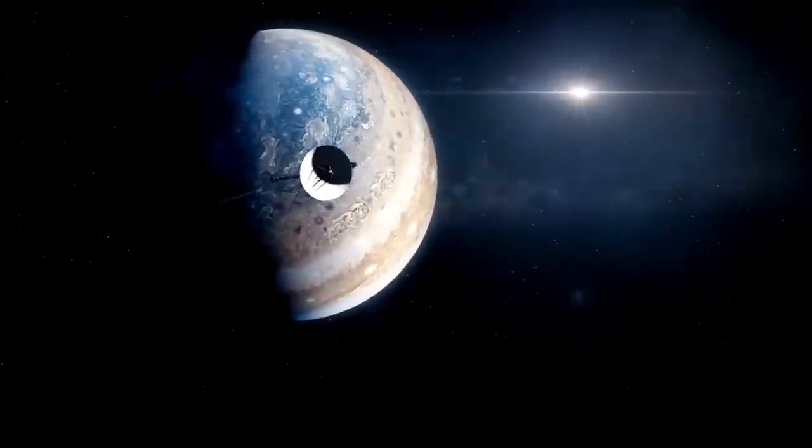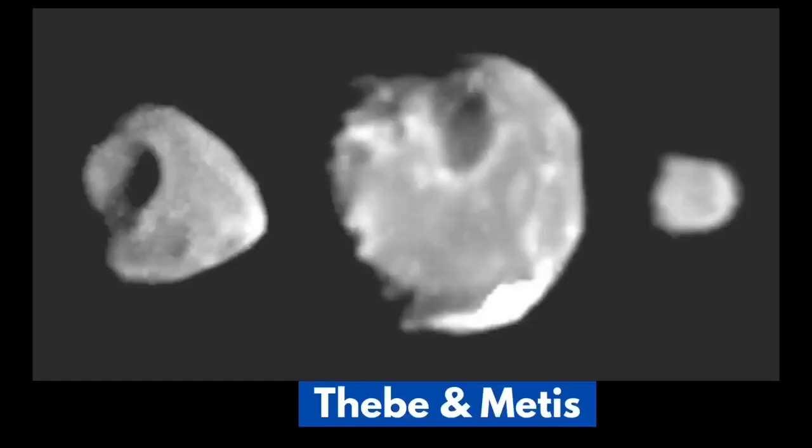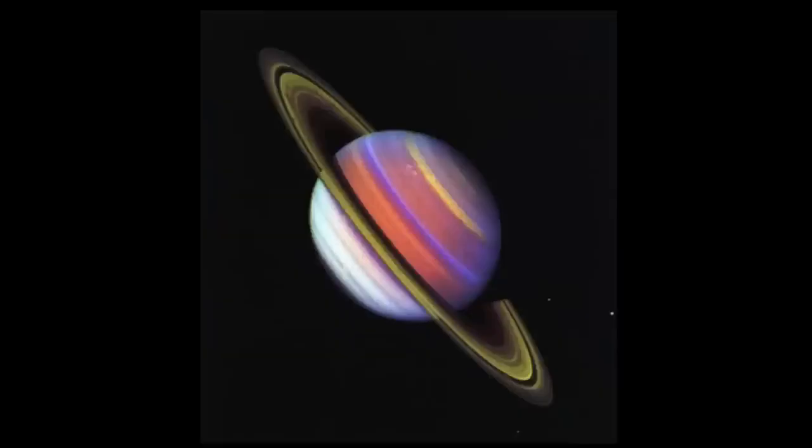Voyager 1 discovered a thin ring around Jupiter and two new Jovian moons, Thieve and Metis. At Saturn, Voyager 1 found five new moons and a new ring called the G-Ring.